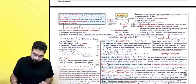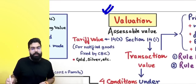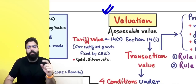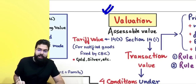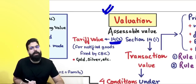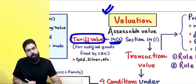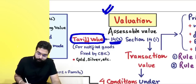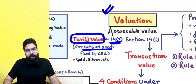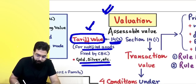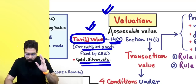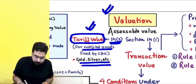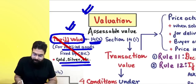For valuation under customs, Section 14 is applicable. Section 14(1) talks about transaction value, but transaction value is only applicable when tariff valuation is not applicable. If tariff value has been notified by the government for your goods, you will pay duty based on tariff value. CBIC notifies tariff value for certain goods like gold and silver. If you import gold or silver, duty shall be payable on tariff value, not transaction value.